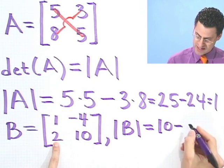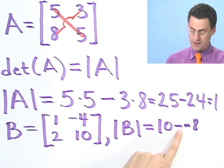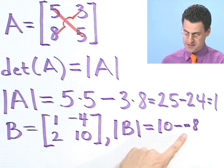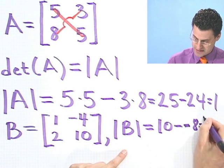So I have a 10 minus negative 8. So a negative times a negative is a positive. So in fact, I see 8 plus 10, which is 18. So this actually equals 18.